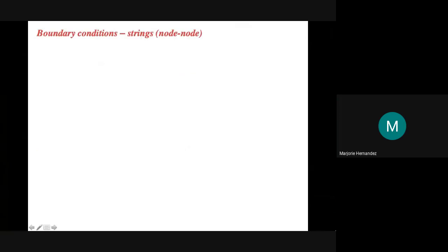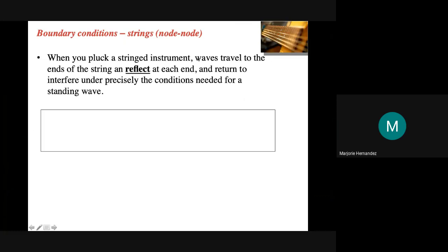Now we're going to discuss some boundary conditions. We discussed this a little bit before the break, but now we're going to relate it to standing waves. There are several boundary conditions for standing waves. The first is boundary conditions for strings, or what we're calling the node-node boundary conditions. The best example is a string instrument like a guitar.